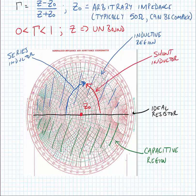A series capacitor will move downwards on a line of constant resistance. And a shunt capacitor will move downwards on a line of constant conductance.